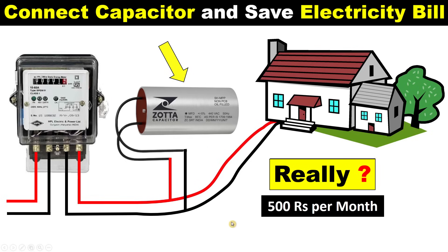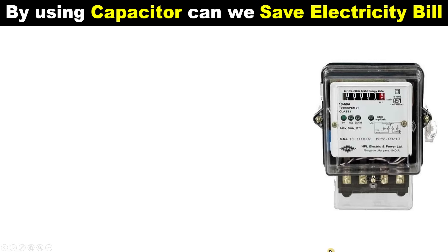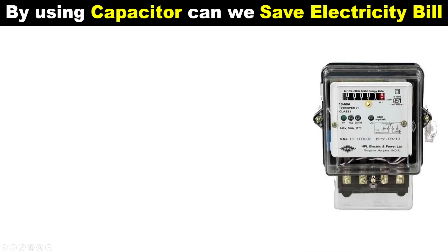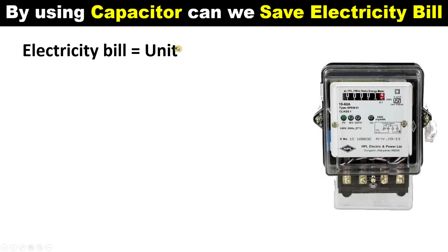First, let us understand how the electricity bill that comes to our home is calculated. In your home, bulbs, fans, or any electrical instruments you use — the power supply goes to these devices through an energy meter. This energy meter calculates the electricity bill of your house, measuring how much power is consumed. The meter reading is shown in units.